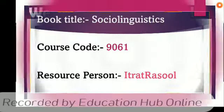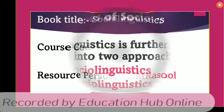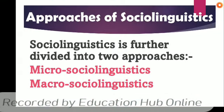Today we have the book title Sociolinguistics and the course code is 9061. I am Itad Rasool with you guys. Today we have the topic: approaches of sociolinguistics. Sociolinguistics is divided into two approaches.